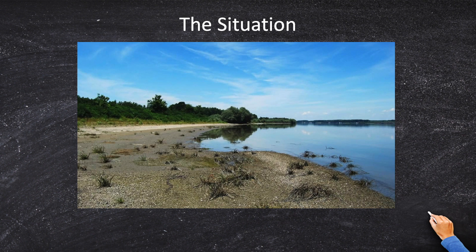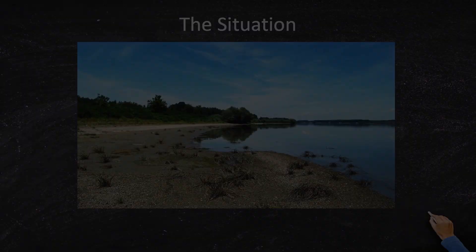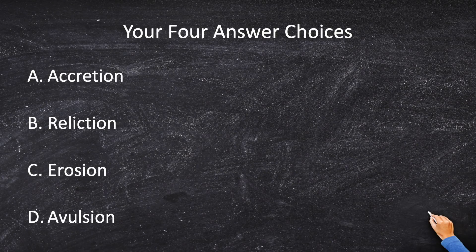Now this could last for a day or it could last for a lifetime. All you're asked to do is define what this term is. There are four terms in water boundary processes: accretion, reliction, erosion, and avulsion.